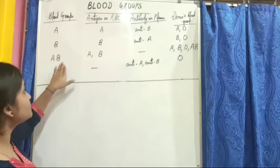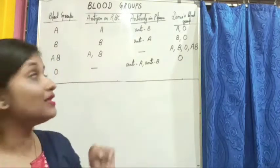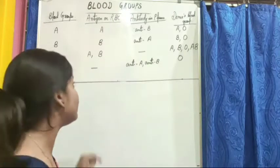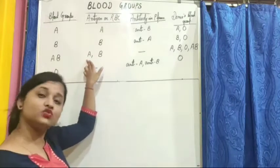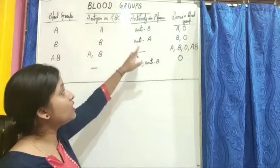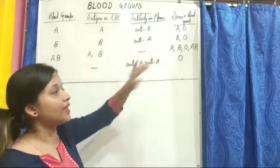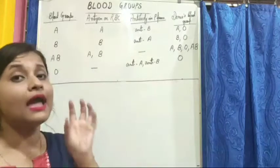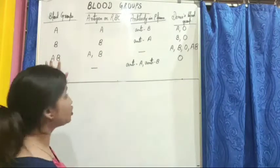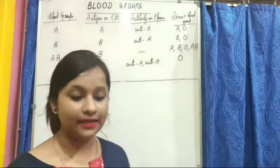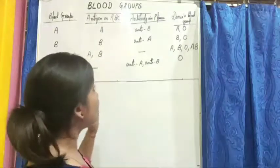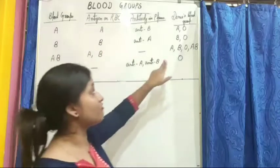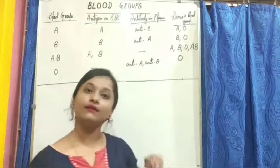A person having blood group AB has both antigen A and antigen B on the surface of their RBC, and no antibody in the plasma. Because there are no antibodies, a person with blood group AB can receive blood from persons having blood group A, B, O, and AB — everyone can donate.